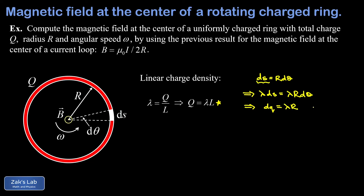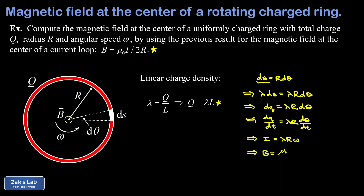We arrive at DQ = lambda·R·dθ. Now we divide both sides by DT: on the left-hand side we get DQ/DT, which is the rate at which charge is passing that point — in other words, the current. On the right-hand side, we get lambda·R·dθ/DT, which is lambda·R times the rate of change in angle, in other words omega. So plugging in I for DQ/DT and omega for dθ/DT, we have I = lambda·R·omega. Finally, plugging this into our previous result for the magnetic field, B = mu-naught·I/(2R) = mu-naught·lambda·R·omega over 2R, and the R's cancel, giving B = mu-naught·lambda·omega over 2.